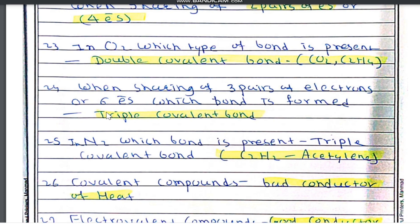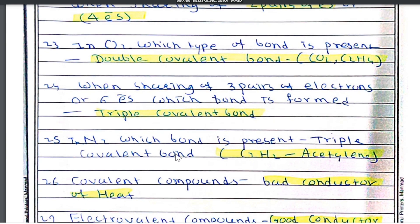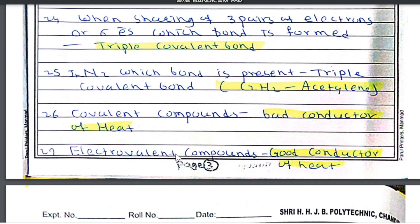When sharing of three pairs of electrons, or six electrons, occurs, a triple covalent bond is formed. Question number 25: in nitrogen, a triple covalent bond is present — sharing of three pairs of electrons or six electrons between the atoms. Another example of a triple covalent bond is C2H2, that is the acetylene molecule.